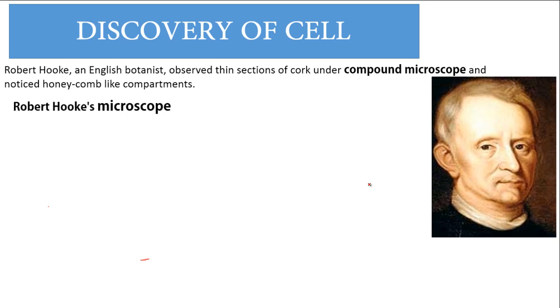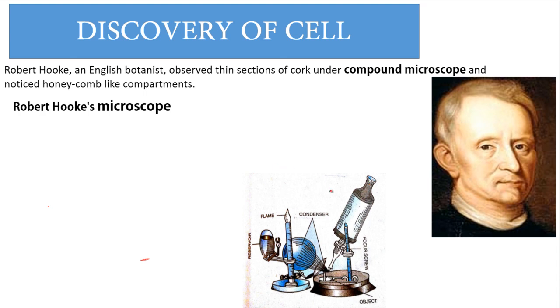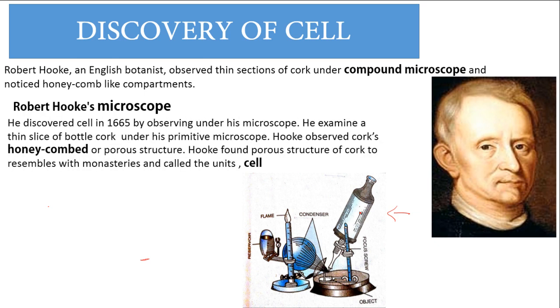Robert Hooke's microscope. There is Robert Hooke microscope, which was made by him. He discovered cell in 1665 by observing under his microscope. He examined a thin slice of bottled cork under his primitive microscope.